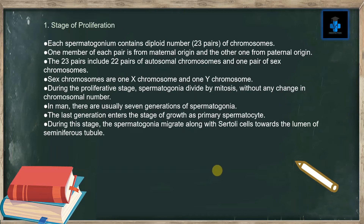Sex chromosomes are one X chromosome and one Y chromosome. During the proliferative stage, spermatogonia divide by mitosis without any change in chromosomal number. In man there are usually seven generations of spermatogonia. The last generation enters the stage of growth as a primary spermatocyte. During this stage, the spermatogonia migrate along the Sertoli cells towards the lumen of the seminiferous tubule.